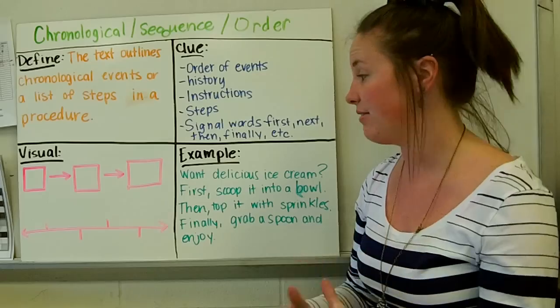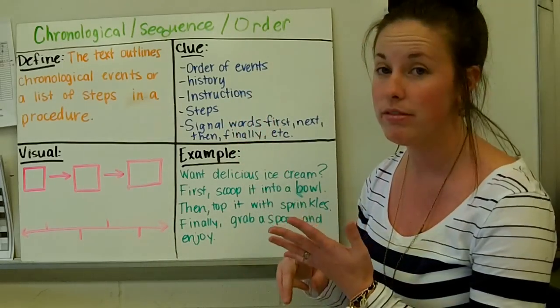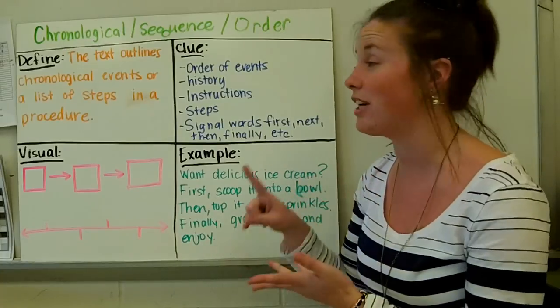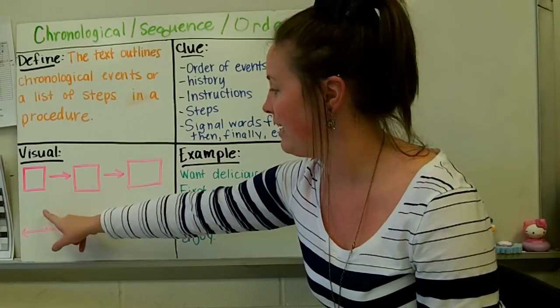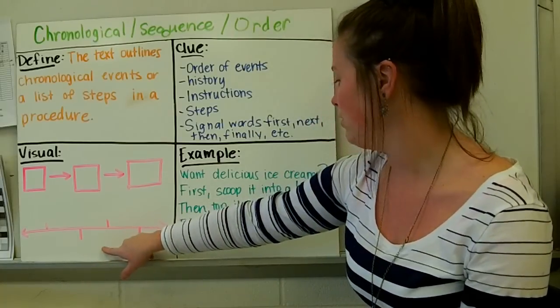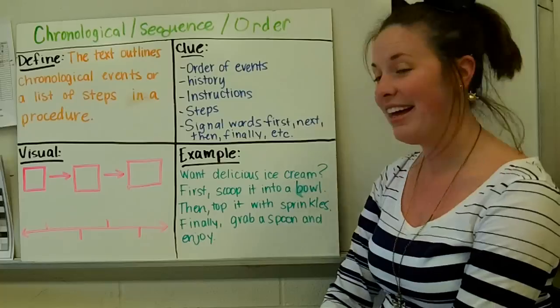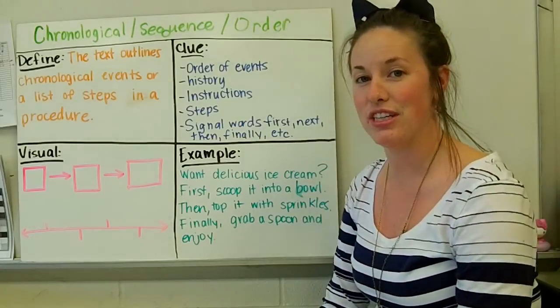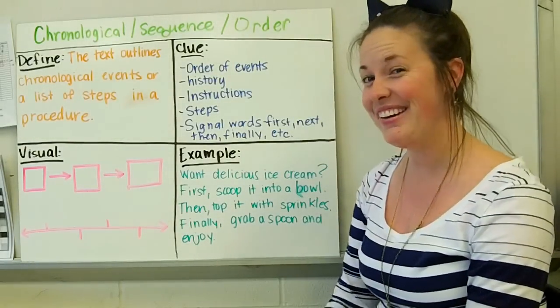So, if I were sequencing these events using my timeline to prove that it's chronological structure, sequence structure, or order structure, first, I would put maybe scoop it into a bowl. Top it with sprinkles. And grab a spoon and enjoy. So, those are the five text structures we're going to be talking about this week. Hope to see you soon. Peace.